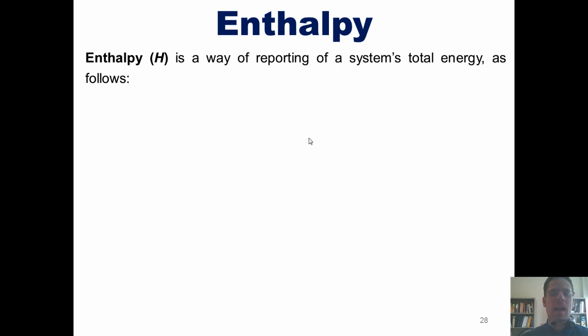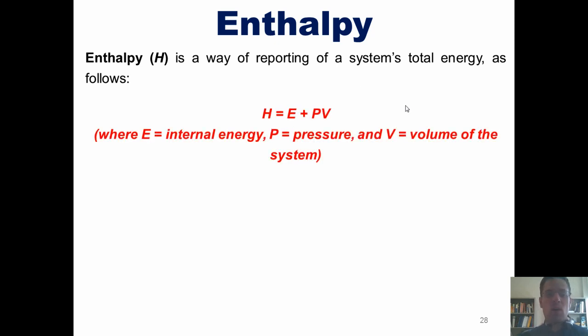Let's now turn to a different subject, enthalpy. Enthalpy, abbreviated as H, is a way of reporting a system's total energy according to the following equation: Enthalpy equals E plus P times V, where E equals internal energy, P equals pressure, and V equals the volume of a system. Now, remember earlier how I mentioned that heat is not abbreviated using the letter H, but the letter Q? And I promised you I'd explain why. The reason is because we use the letter H for enthalpy. And in order to avoid confusion, we use the letter Q for heat. You might ask, why in the world didn't we use the letter E for enthalpy? Well, the reason is because the letter E is reserved for energy, which is something else.